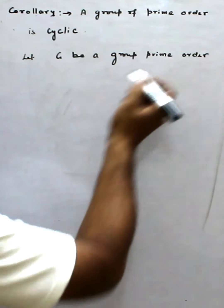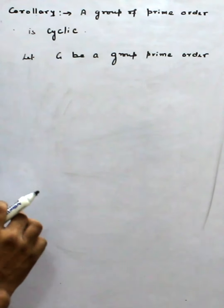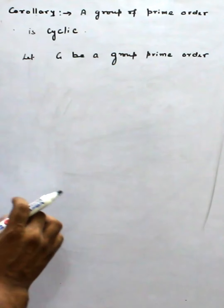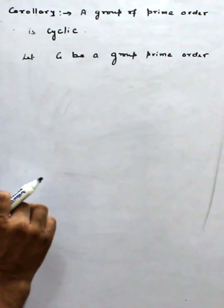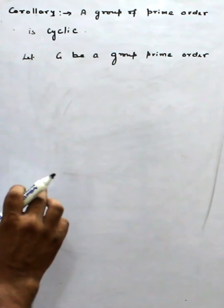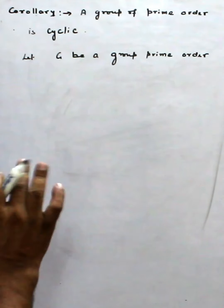So what is prime mean? Prime means a number is prime if it is divided by itself or one. Only two numbers divide, so it either divides one or itself.